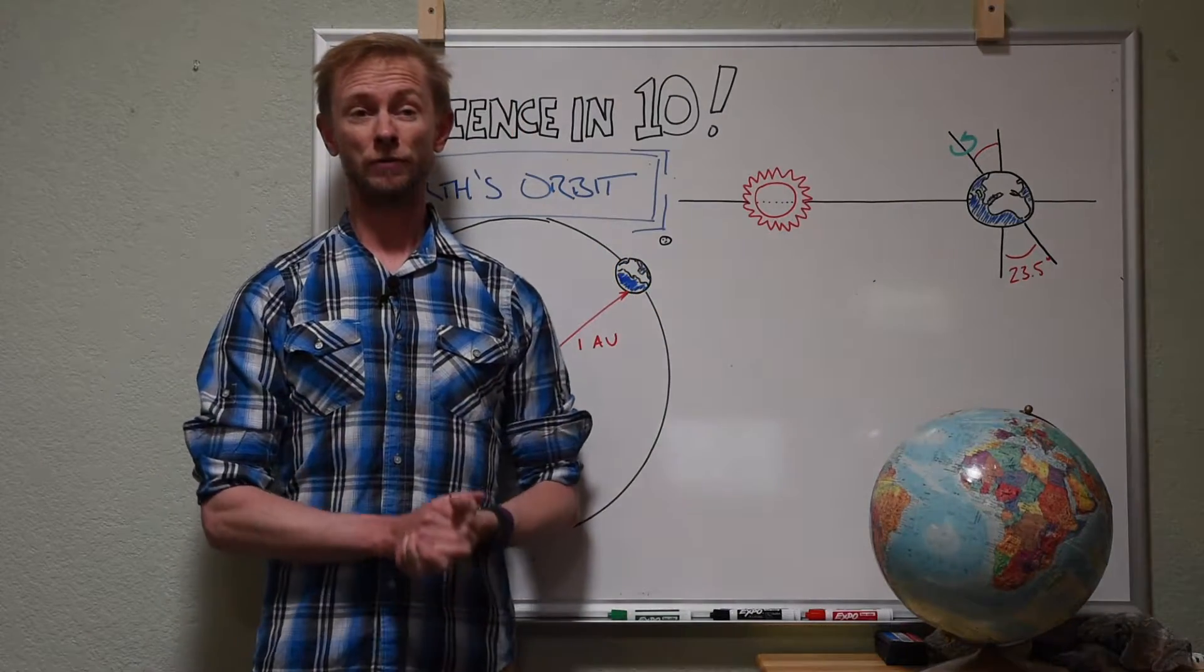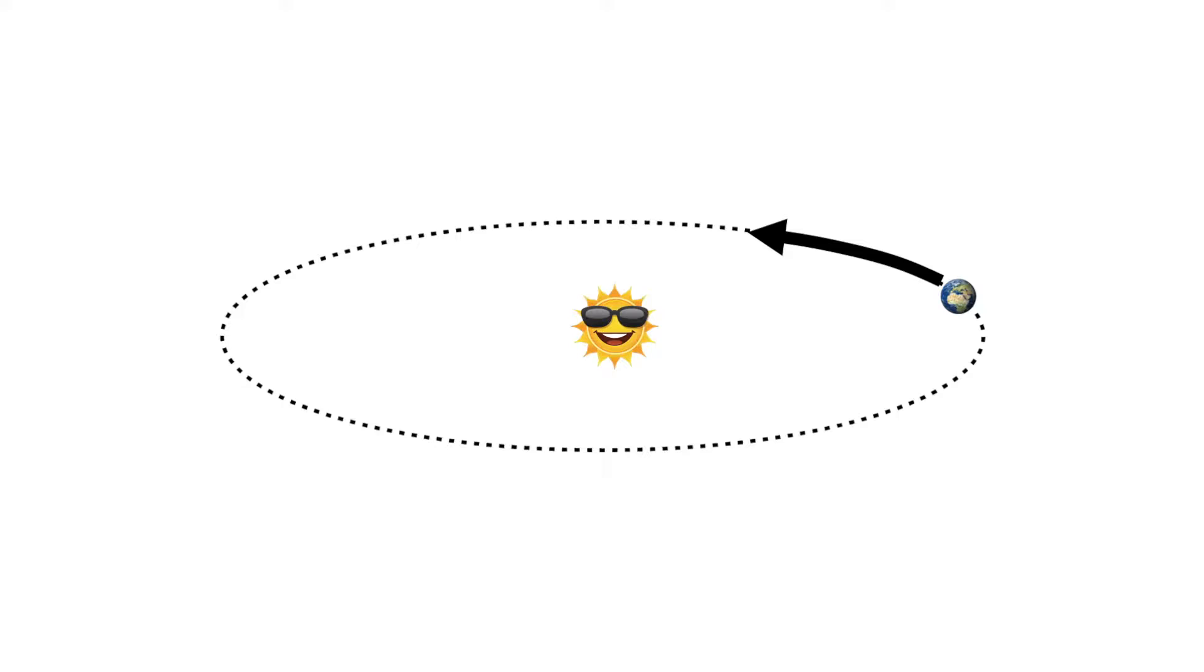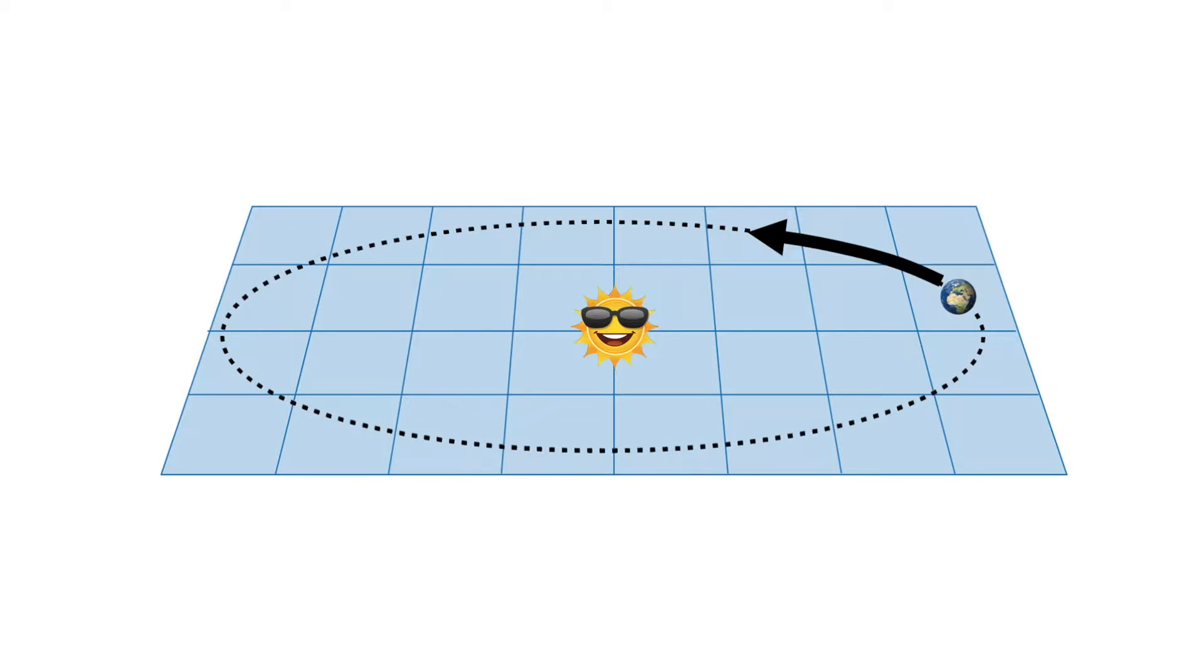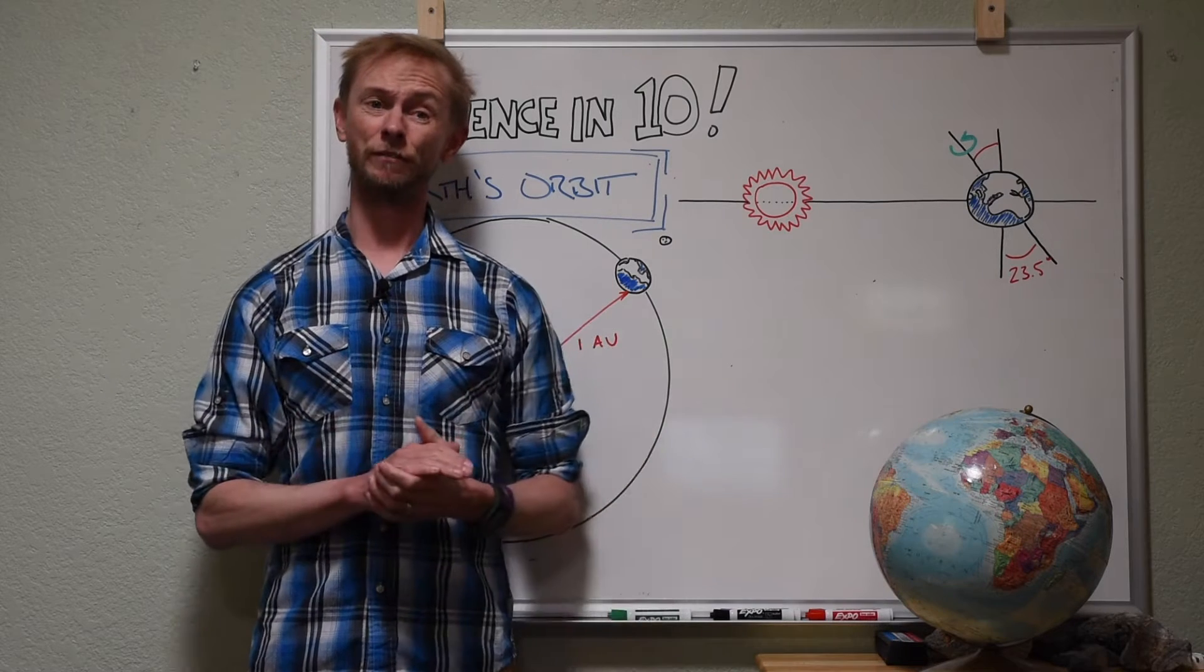As our Earth travels around the sun, it does so within the plane of the ecliptic, a two-dimensional surface defined by the orbital path of the Earth. Within this ecliptic plane, on average, the Earth orbits the sun at a radius of 150 million kilometers or one astronomical unit. But that's just an average.